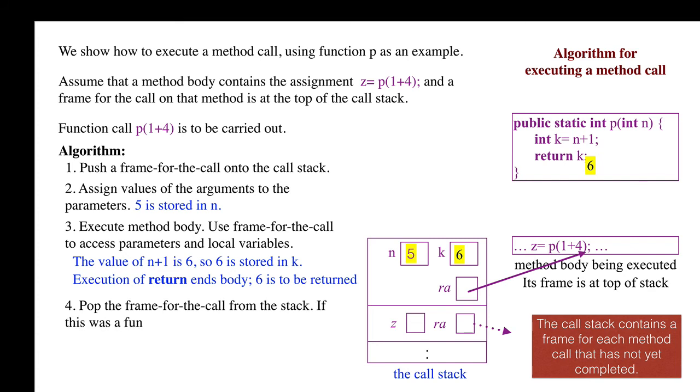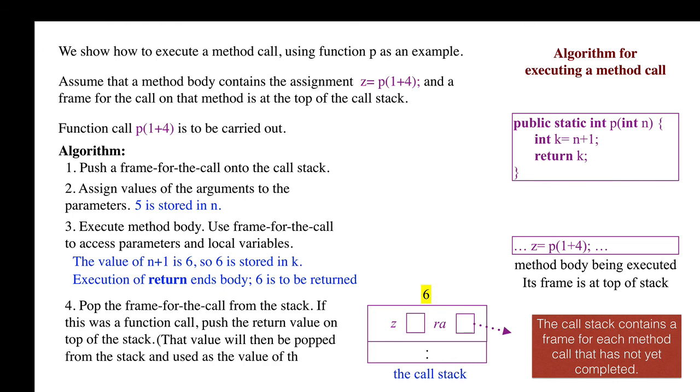Step 4 of the algorithm: Pop the frame for the call from the call stack. There it goes. If this is a function call, and in this case it is, push the value to be returned onto the call stack. Note that the value will then be popped from the stack and used as the value of the call. So z will be assigned. That's it.